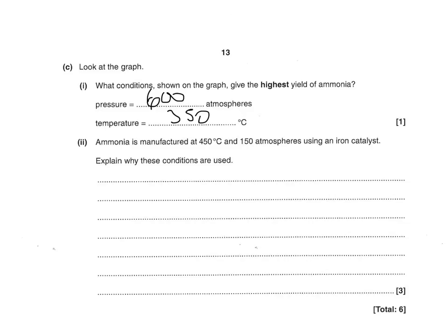Ammonia is manufactured at 450 degrees and 150 atm using an iron catalyst. Explain why these conditions are used — three marks, so talk about each condition in turn. The catalyst is used to speed up the reaction — that gets you one mark. For the temperature: it's too slow at lower temperatures, but a higher temperature decreases the percentage yield, so you need to say both of those for the temperature mark. The third mark is about pressure: very high pressures are expensive, or lower pressure would decrease the percentage yield — one of those gets you the third mark.